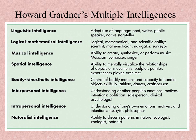Body kinesthetic intelligence is someone who is very good at controlling their movements, very good with their body, very good at moving around and creating things with their body. These people are very coordinated — they can dance, and athletes have this strength of intelligence.